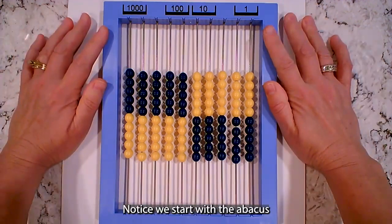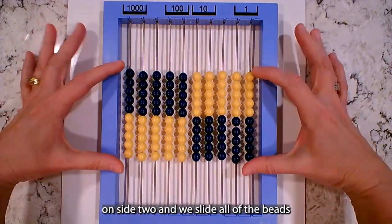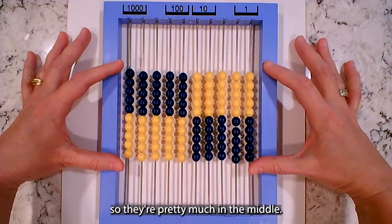Notice we start with the abacus on side two and we slide all of the beads so that they're pretty much in the middle.